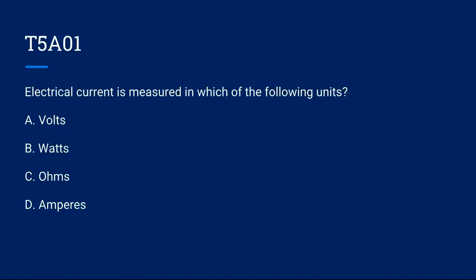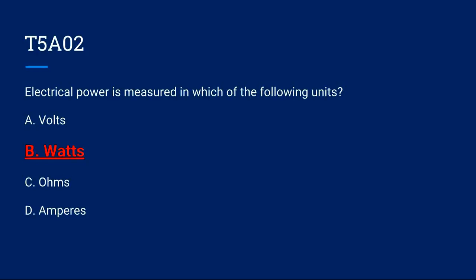T5A01, electrical current is measured in which of the following units? A. Volts, B. Watts, C. Ohms, or D. Amperes. Correct answer is D. Amperes. T5A02, electrical power is measured in which of the following units? A. Volts, B. Watts, C. Ohms, or D. Amperes. Correct answer, electrical power is measured in watts, B. Watts.